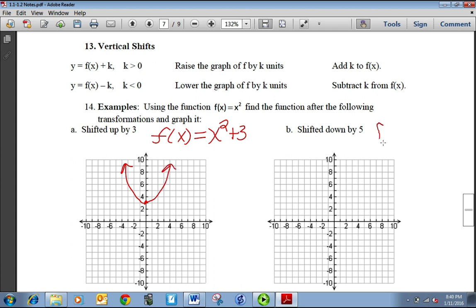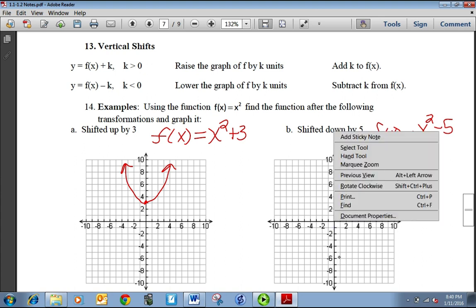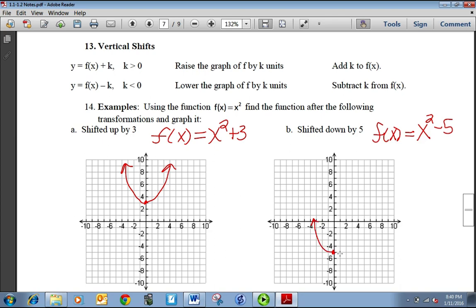If you shift it down by 5, then you're just subtracting 5. So it's x squared minus 5. Take where its vertex normally is, shift it down 5, and then draw your graph.